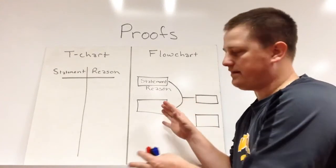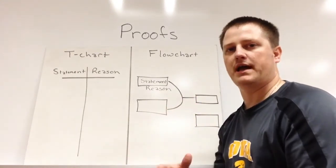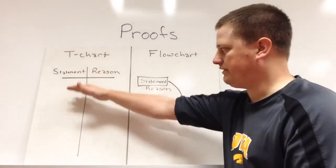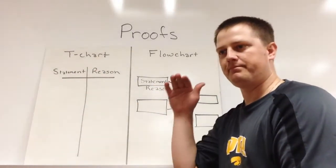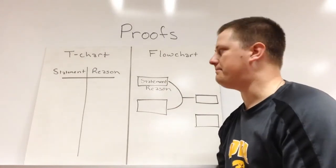So this one kind of groups things together that work together to prove new things, whereas this one is just a straight bullet point of all the things that you can set up from the picture.